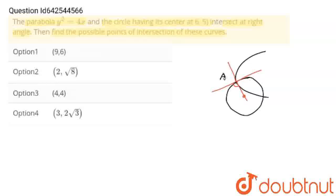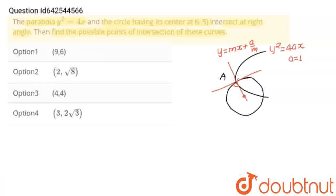Suppose the point of intersection is A. The equation of this tangent is y = mx + a/m. We have studied this equation of tangent formula for parabola y² = 4ax. For parabola y² = 4x, equation of tangent is this. Since the curve is y² = 4x, the value of a is 1. For this tangent, the point of intersection is (a/m², 2a/m). Since a = 1, the point of intersection is (1/m², 2/m).